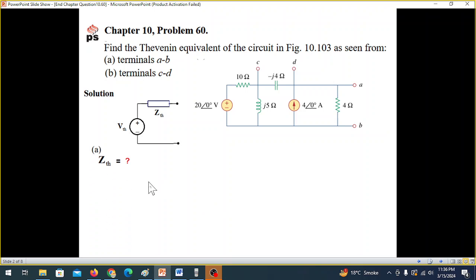So first of all, part A, we find Z_Thevenin first. Now we have eliminated this part because we are only concerned with AB. So this is the circuit. And to find Z_Thevenin, we know that we have to open circuit the current source and short circuit the voltage source.